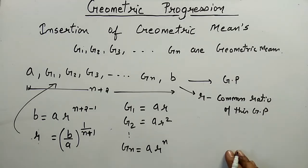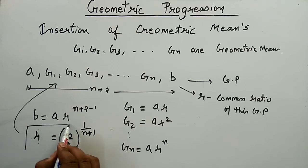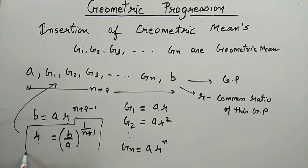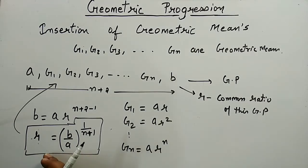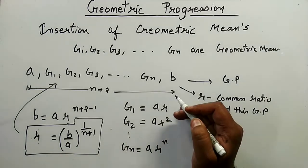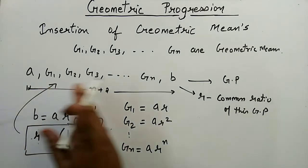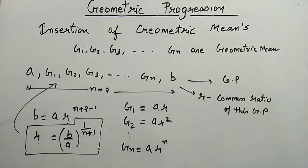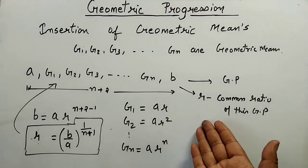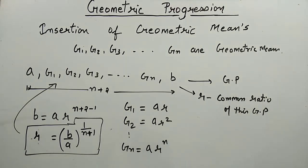For solving questions based on insertion of geometric means between two numbers, the first thing you find is the common ratio. Once you have found the common ratio, put it into the formula to find the resulting terms of the geometric progression.